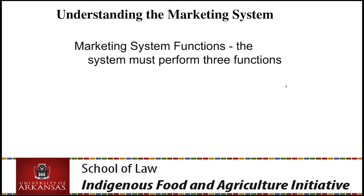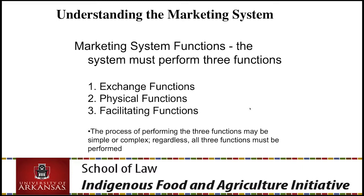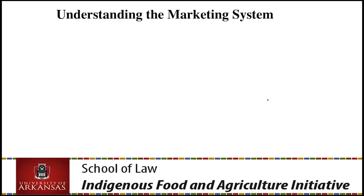Now, what about market system functions? It's well and good to understand the different utility components, but a market has to function — it doesn't just exist in theory. There are three things the market must do to operate: it has to have and perform the exchange function between buyers and sellers, it must perform various physical functions, and it must perform facilitating functions. These functions must be performed for the market to work.